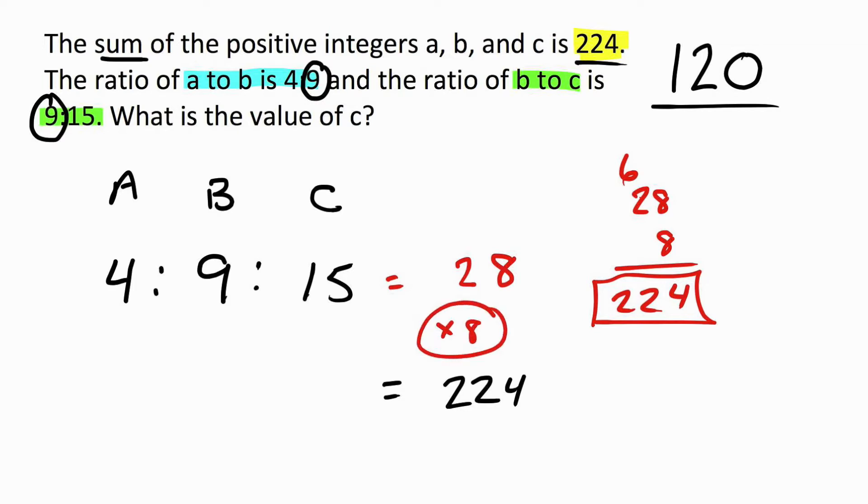And why is this important? Well, because we find our target. Our target is C. C says it's 15, but if we apply our 8 times multiplier, 15 times 8 equals 120. So, our new C is 120 if we just apply that multiplier.